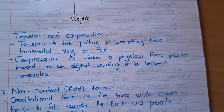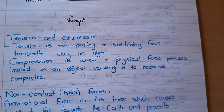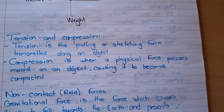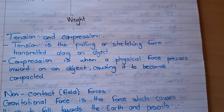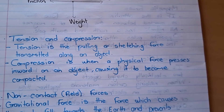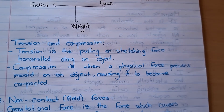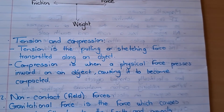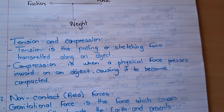Next we have tension and compression. Tension is the pulling or stretching force transmitted on an object. For example, in a tug of war with four people on each side, there is tension in the rope because it is being stretched. Similarly, if you take an elastic band and pull it straight, you are causing tension because it is stretching.